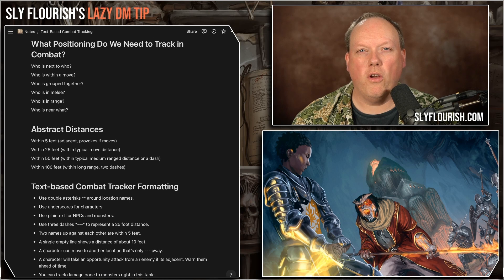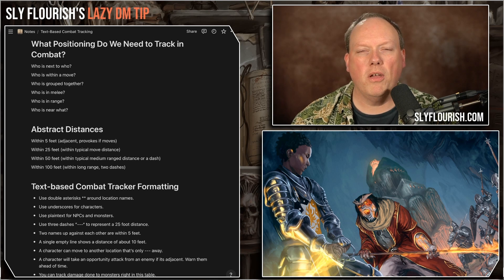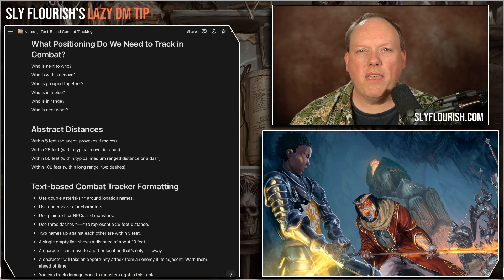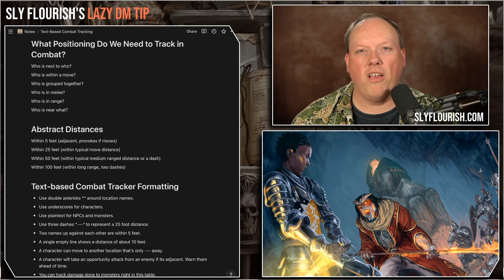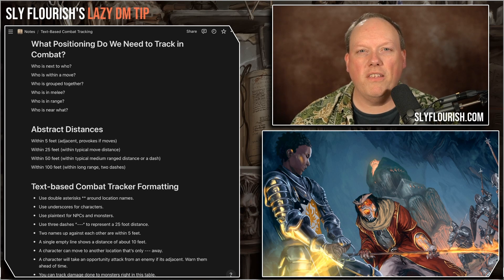When it comes to tracking combat positioning, there are a few things that are really important: who's next to who, what is within one move of me, who's grouped together, who's in melee with other opponents, who's within range of my ranged attacks, and who is near what. Most of these don't require very specific distances. If we're thinking about the high action of our game, the difference between 20 feet and 25 feet really isn't that interesting — we can think of these things a little more abstractly.